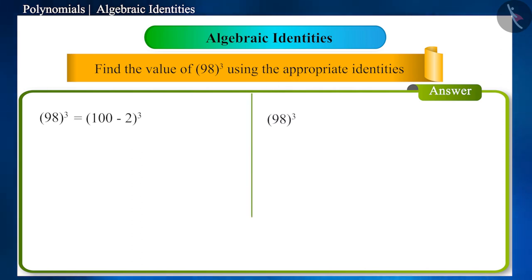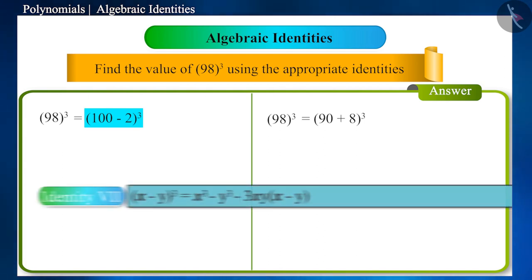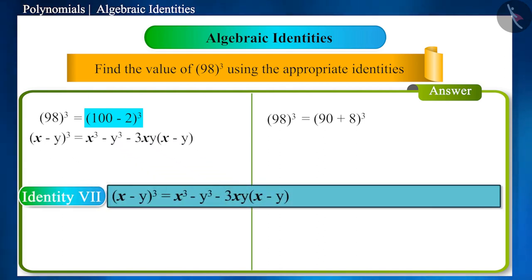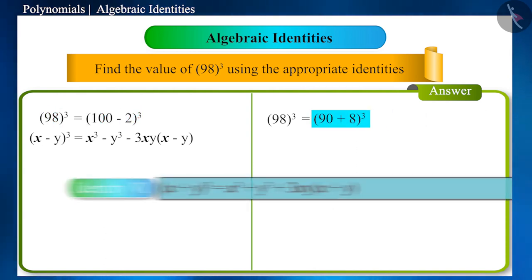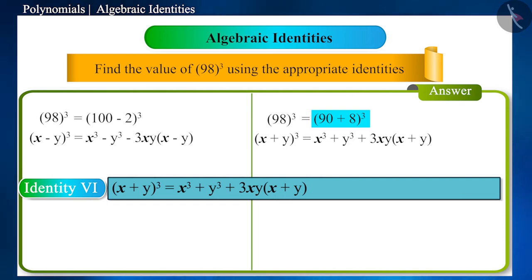Yes, when we write it as (100 - 2)³, then the identity (x - y)³ is used. And for (90 + 8)³, we will have to use the identity (x + y)³.